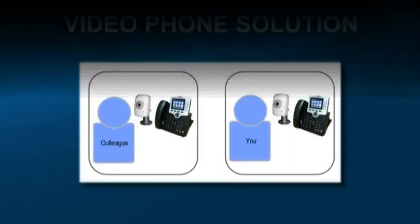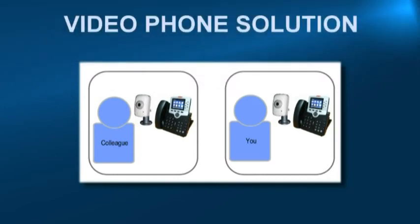Now let's take a look at the framework of a video phone solution. When you make a call to your work colleague, your Web IP Phone will start displaying live video streaming of your colleague from an IP camera located alongside their Web IP Phone. Live video streaming commences once your work colleague has picked up the phone. Meanwhile, your work colleague's Web IP Phone will display live video streaming of you from the IP camera alongside your Web IP Phone.